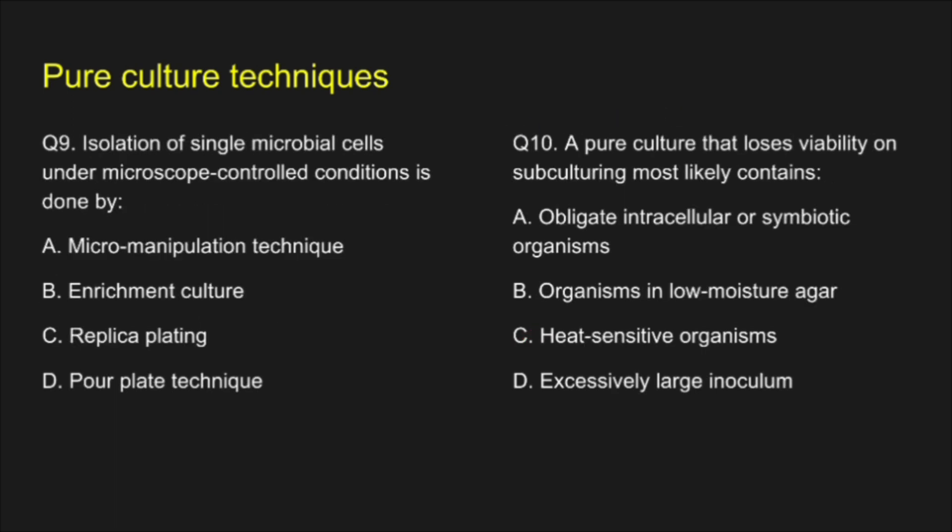Question 9. Isolation of single microbial cells under microscope-controlled conditions is done by — A. Micromanipulation technique, B. Enrichment culture, C. Replica plating, D. Pour plate technique. The correct answer is option A: Micromanipulation technique.